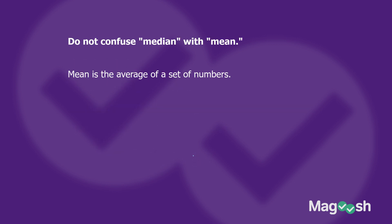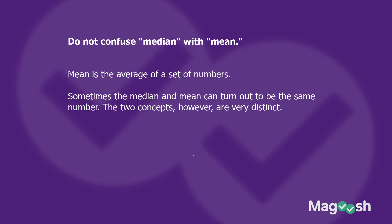This can be confusing because I used the word average, or mean, to arrive at the median — and that's one reason why many people confuse the two. Mean is the average of a set of numbers; just think mean equals average. Median, on the other hand — and sometimes these can end up being the same number, but they are different concepts — is simply the number in the middle. If you have an even number of numbers, you find the average of the two middle numbers, but don't confuse those two concepts.